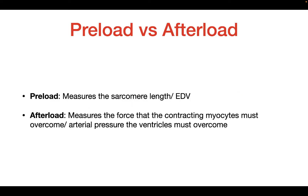I'd like to start off with a few introductory concepts. The first thing is preload versus afterload. Preload is going to be the measure of sarcomere length or end diastolic volume. When the ventricles fill with blood, the myocytes stretch, and as the myocytes stretch, the sarcomere length is going to be stretched as well. So therefore the amount of stretch that the sarcomeres experience is going to be the preload. The afterload is going to be the force that the ventricular myocytes must work against in order to push blood into the aorta, equivalent to the arterial pressure that the ventricles must overcome.